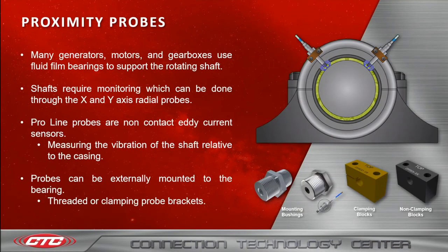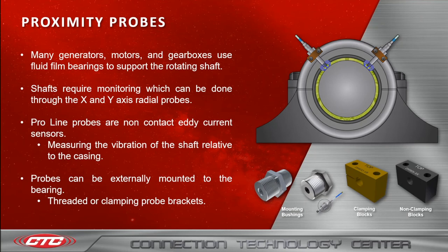That leads us into proximity probes. Many generators, motors, and gearboxes use a fluid film bearing to support the rotating shaft. Shafts require monitoring, which can be done through the X and Y axis radial probes. You can see in the picture to the right that the proximity probes are mounted on the bearing.